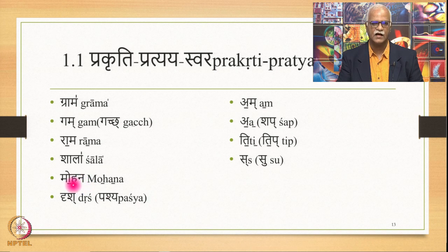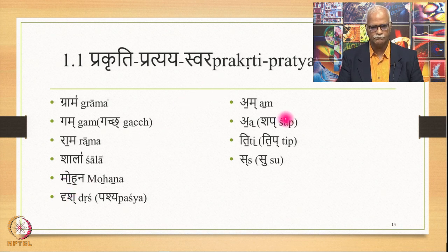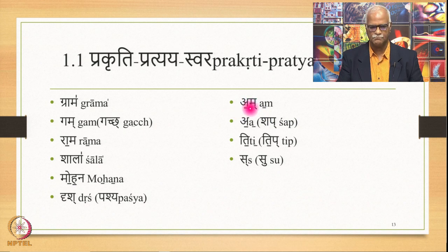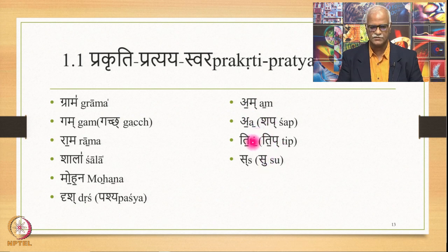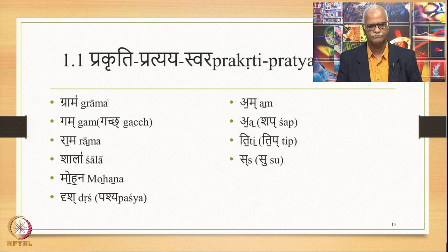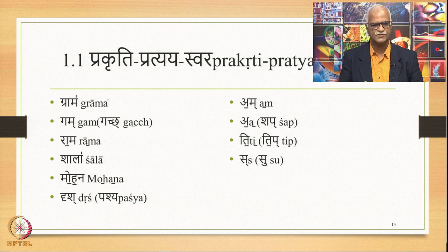Everybody else is Anudathaswara, shown by the horizontal bar below. Drish is Udathaswara. Am, which is a Sub, is by default Anudathaswara. By Anudathaswara, Sub is Pit; Shab is Pit; Tip is Pit. So these vowels are Anudathaswara. And Sa is a consonant, so there is no scope for any vowel getting Udathaswara in it. These are the Prakriti-Pratyaya Swaras, the basic Swaras, from which the Padaswara will be constructed.